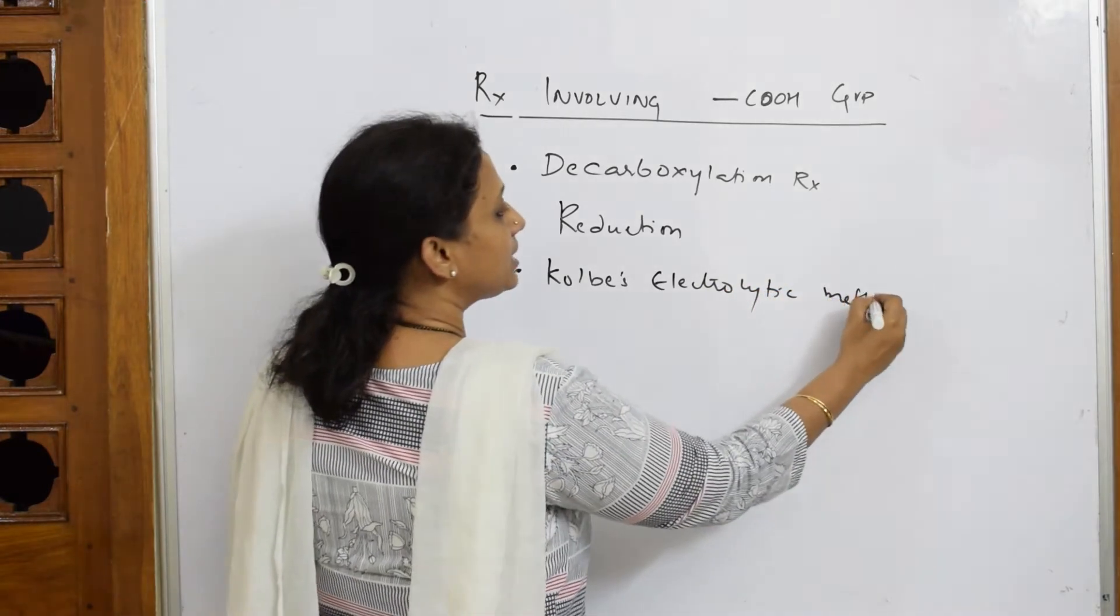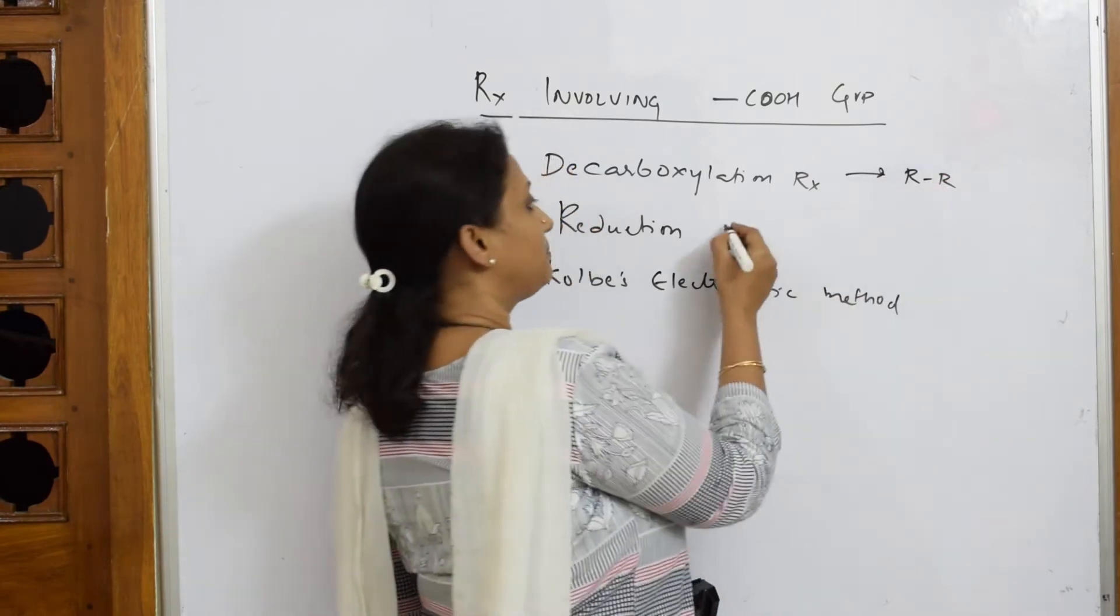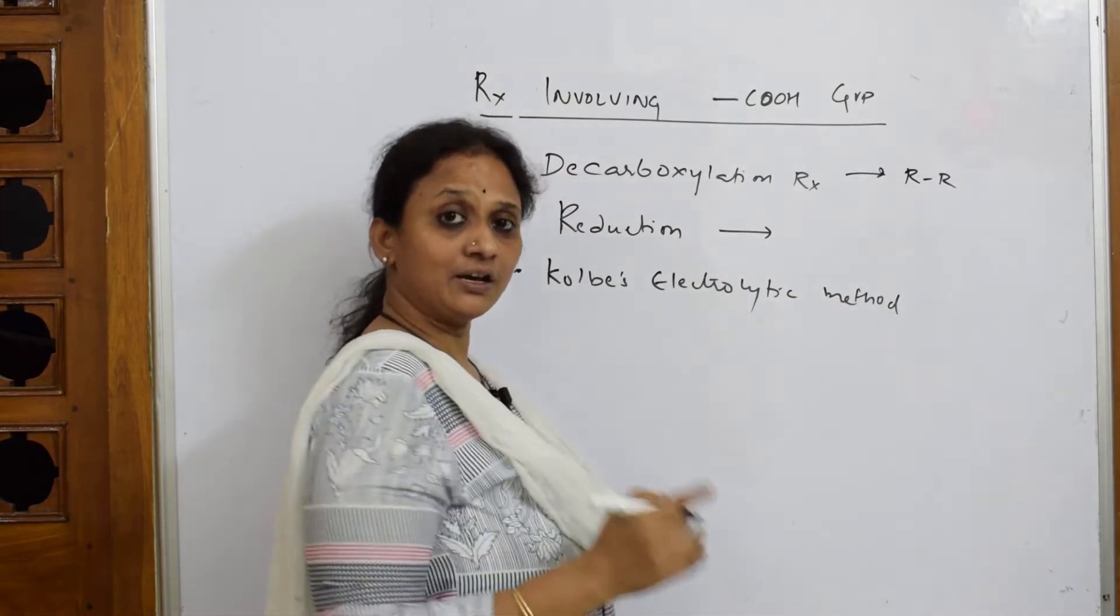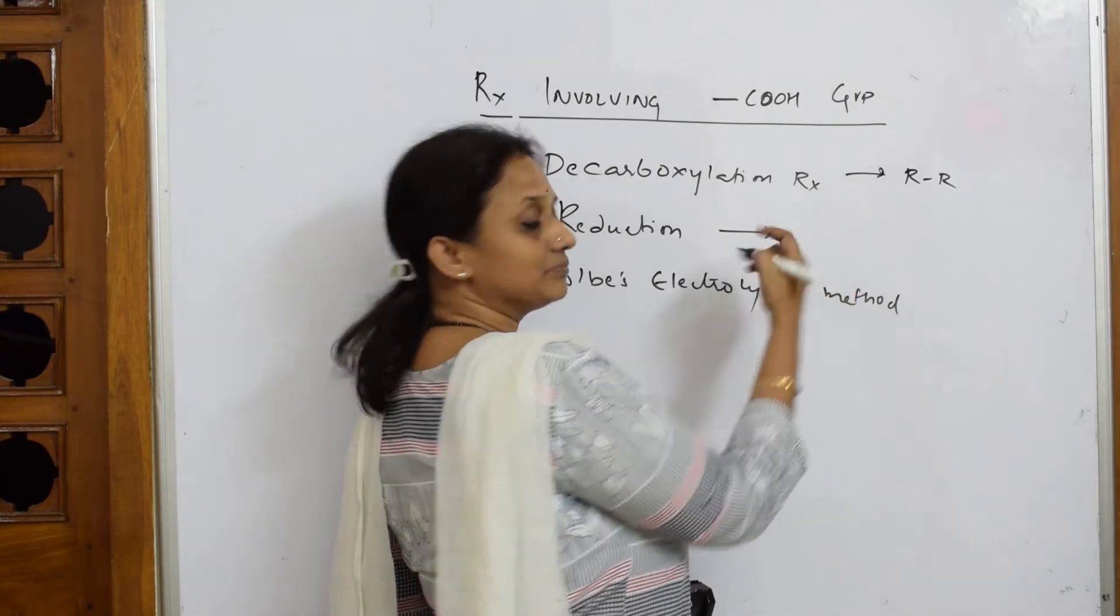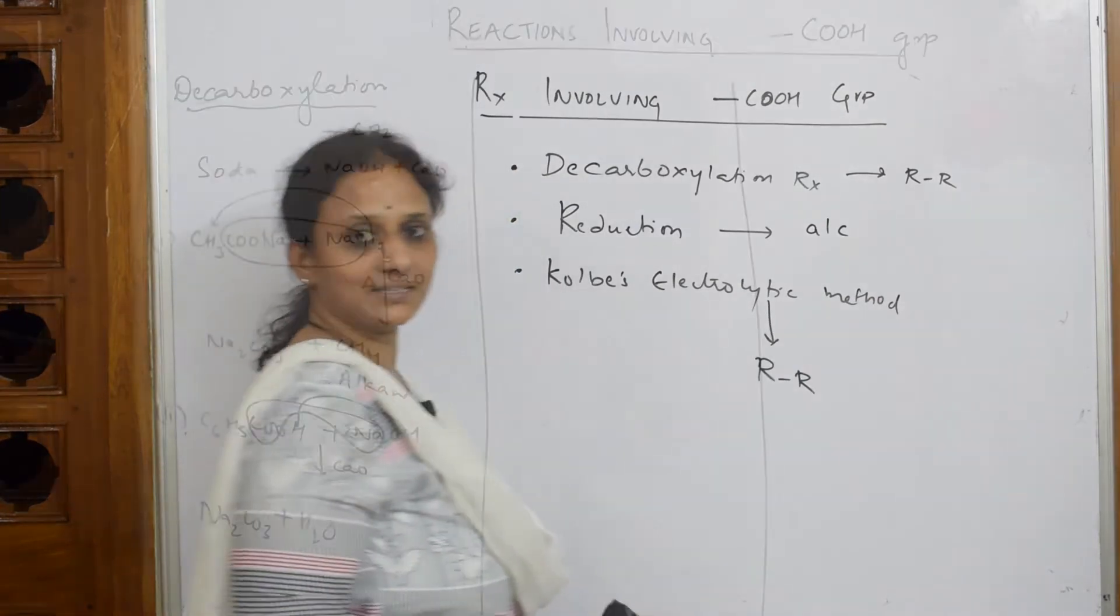By decarboxylation method, I will be preparing alkanes. By reduction, I will be preparing from your glucin acids, alcohols. And by Kolbe's electrolytic method, I will also be preparing alkanes.